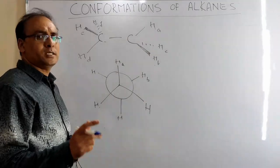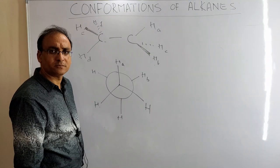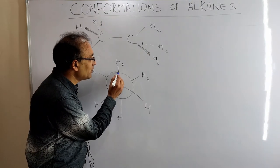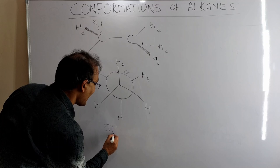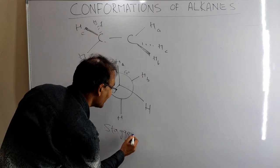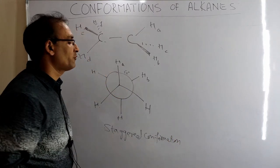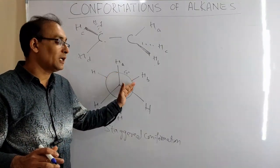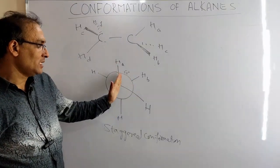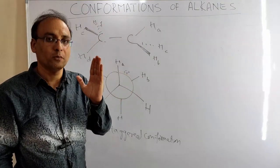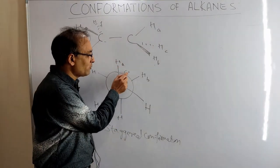Now, if you look at this conformation, these two hydrogens are 180 degrees to each other. You could also call it anti. The angle between adjacent hydrogens here is 60 degrees. This is called staggered conformation — staggered conformation means the angle between adjacent substituents (here, hydrogens) is 60 degrees. This is the most stable conformer.